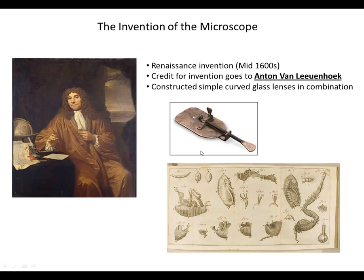Obviously, it looks very different from the kinds of microscopes we're used to today. But Leeuwenhoek, using this microscope, was able to make fairly detailed drawings of organisms like you see here. These are actual drawings that Leeuwenhoek made of flea anatomy. So Anton van Leeuwenhoek is the father of the microscope — obviously a very big step in the history of biology.